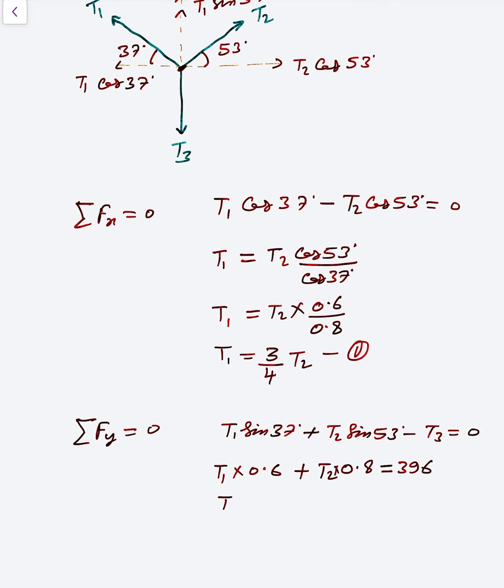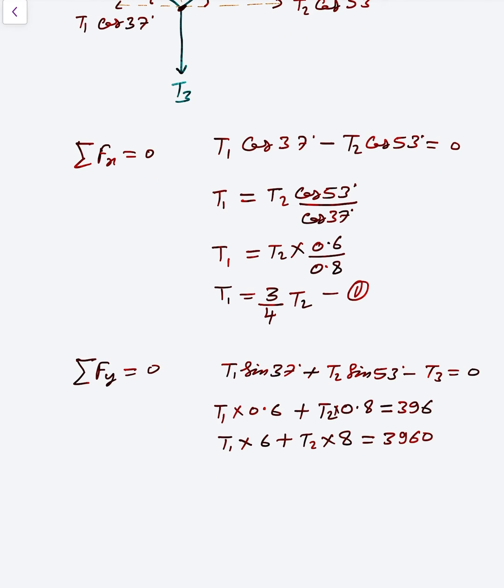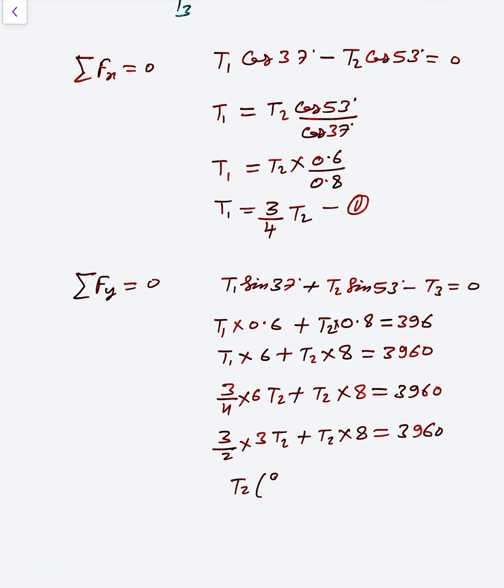Now T1 × 6 and T2 × 8, multiply by 10 then 3960. If we multiply by 10 on both sides, you get that. After that, T1 is 3/4 × 6 × T2 plus T2 × 8 equals 3960. So 9/2 T2 plus 8T2 equals 3960.